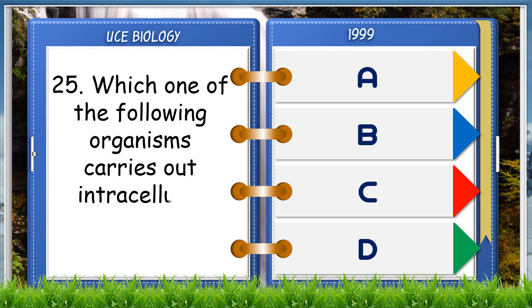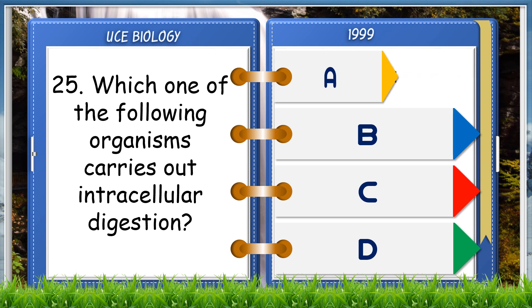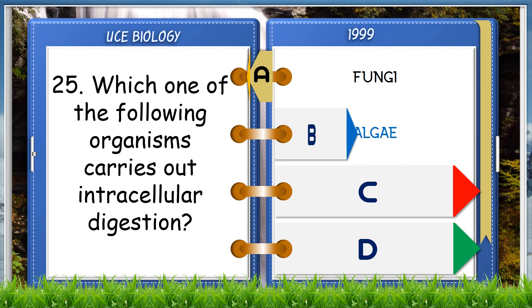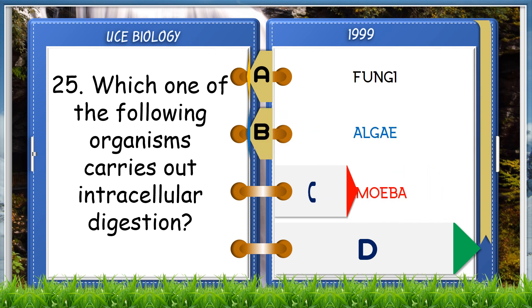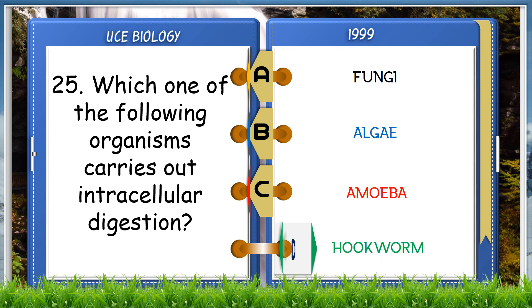Which one of the following organisms carries out intracellular digestion? A. Fungi, B. Algae, C. Amoeba, D. Hookworm. The answer is C, Amoeba.